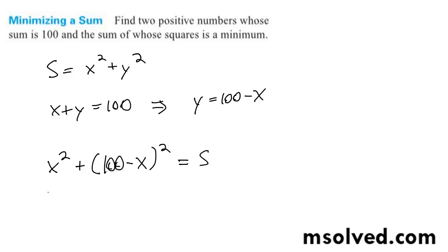So we get x squared plus 100 times 100 is 10,000, minus 200x plus x squared. So we end up with 2x squared minus 200x plus 10,000.